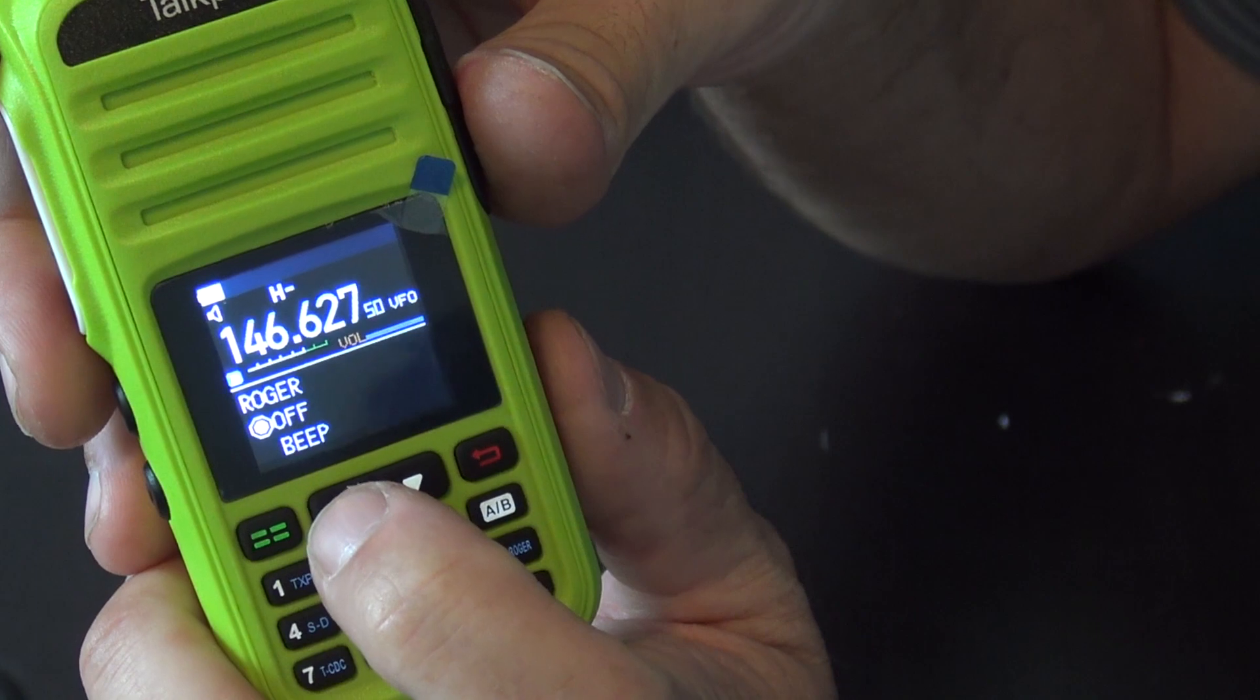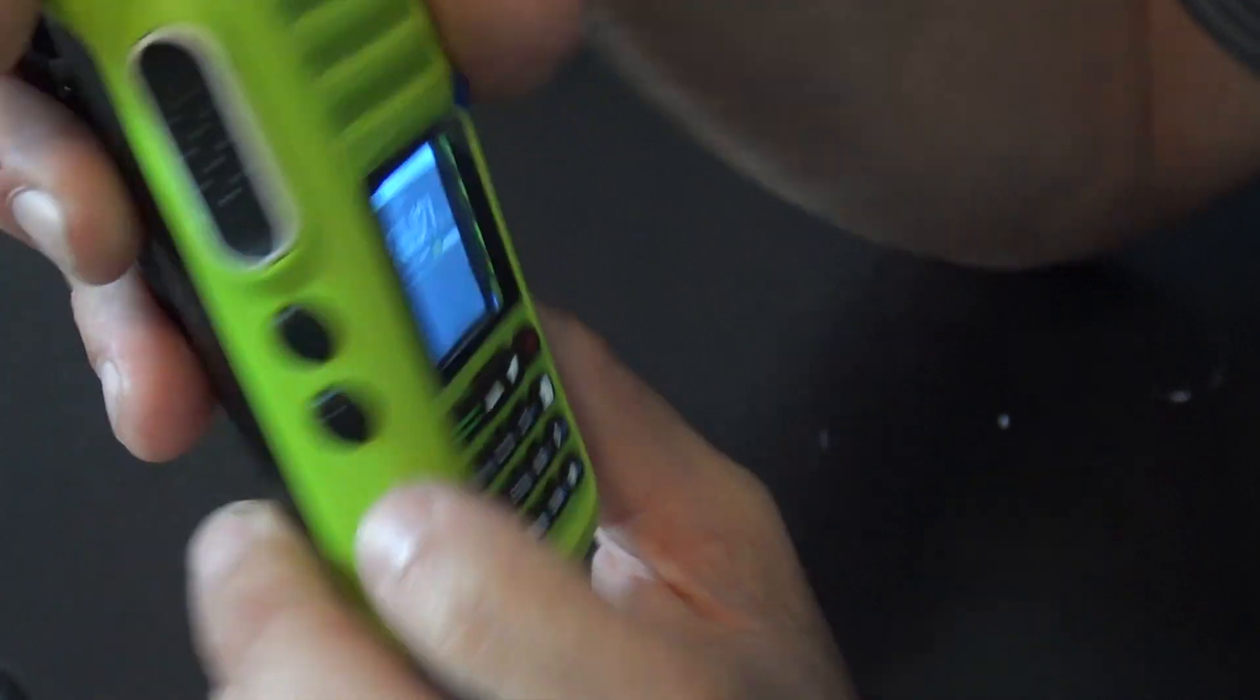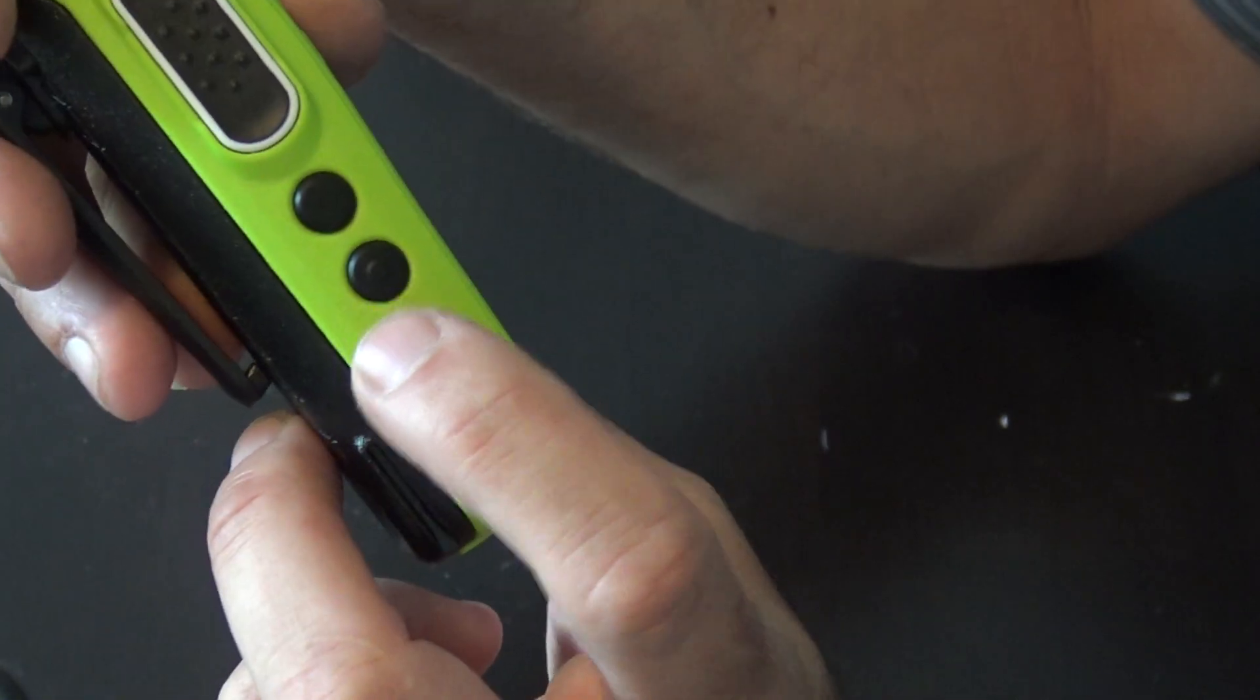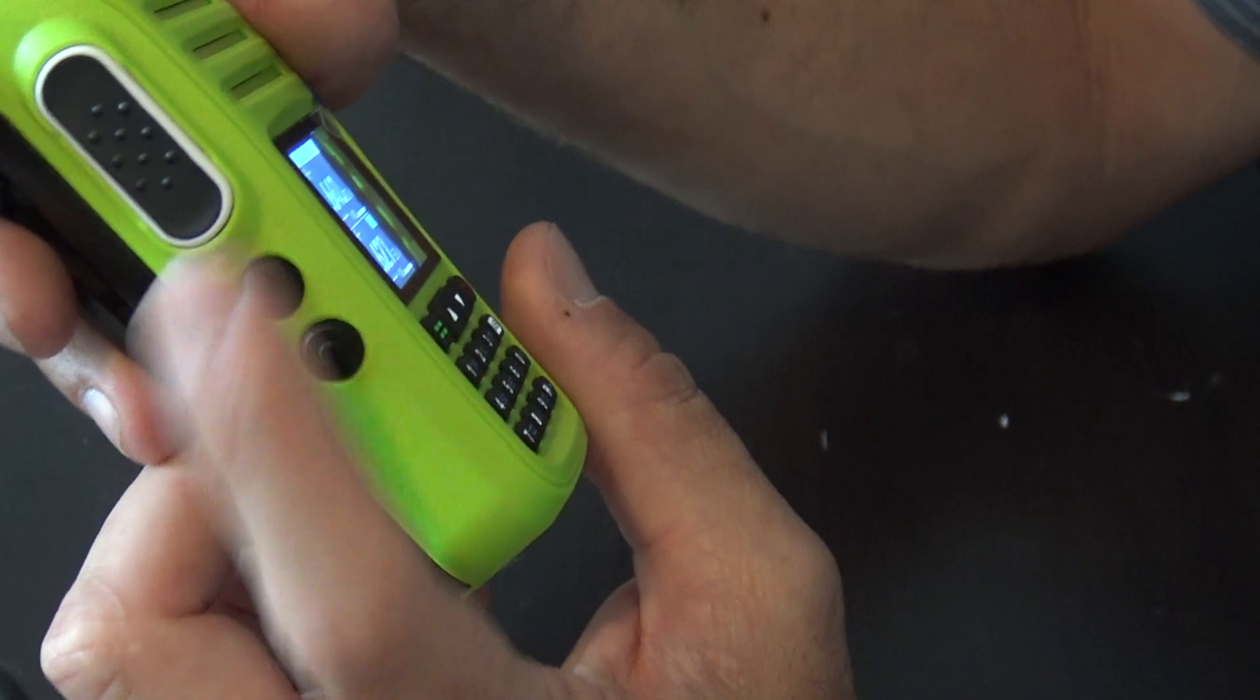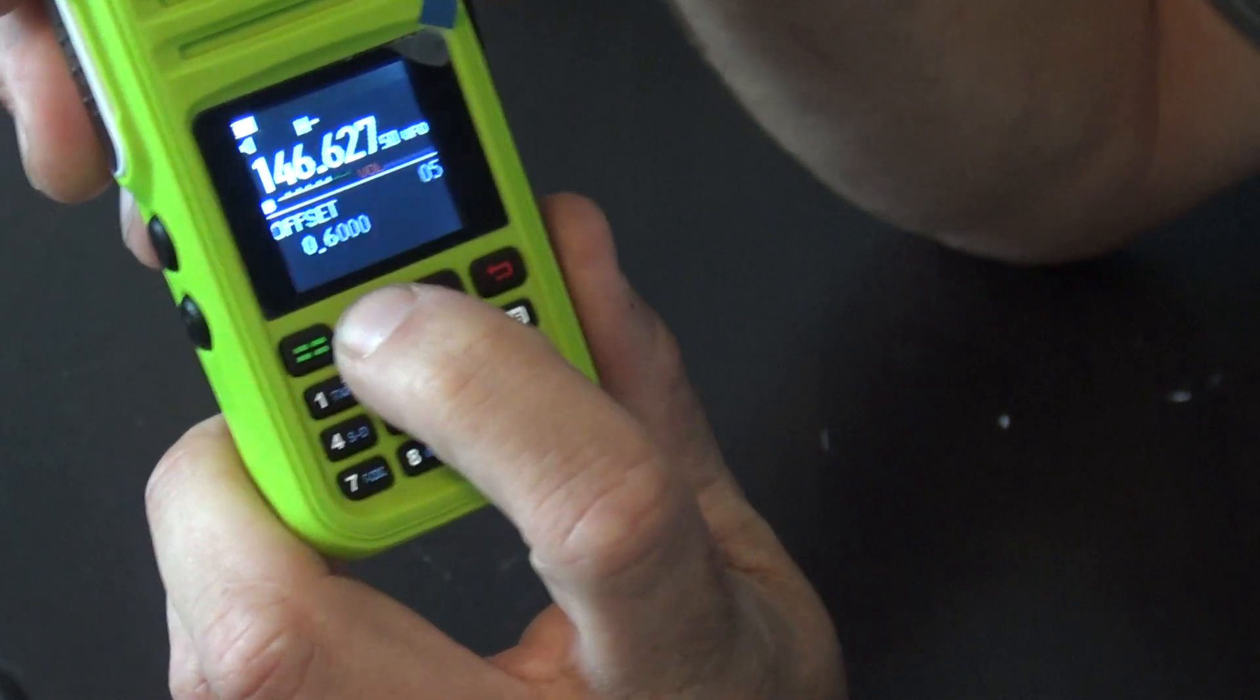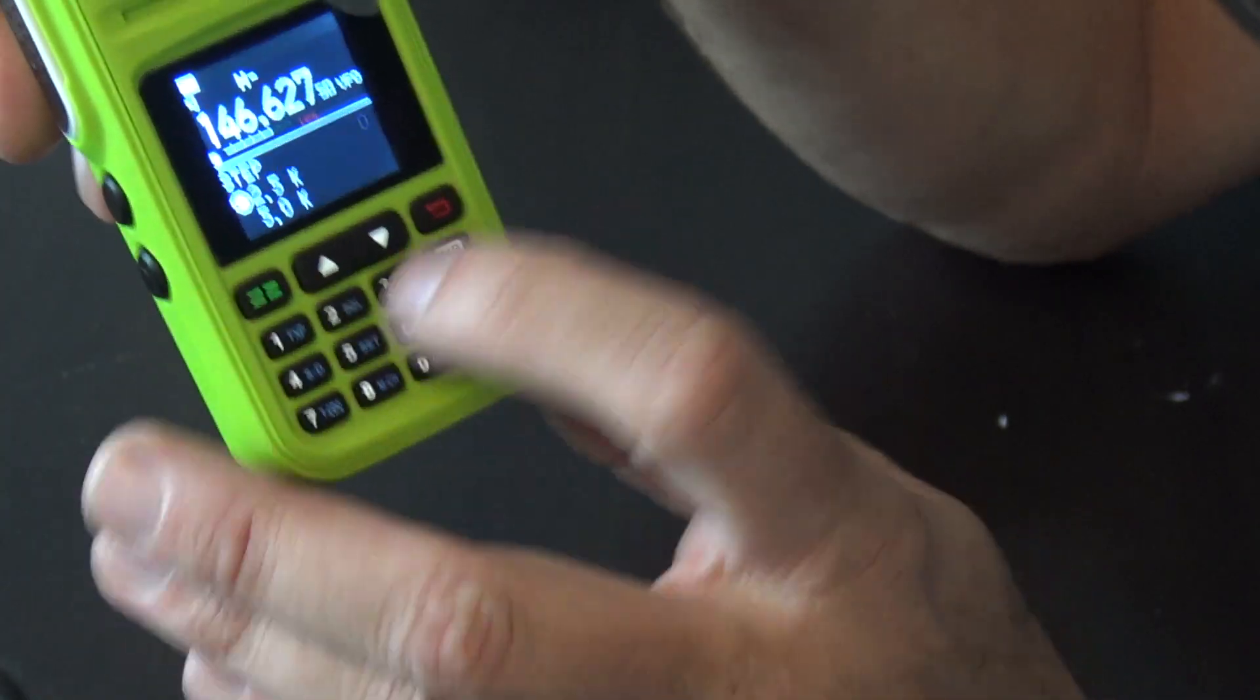The menu here is pretty descript. You can understand that's for the Roger beep, that's for the transmit power high and low. Side programmable buttons here. You can set this to the FM radio on this side, and then number one you can set to transmit power high and low in case you need to bump your power up and down.